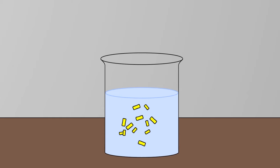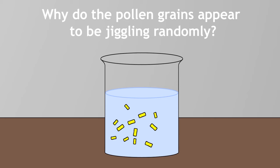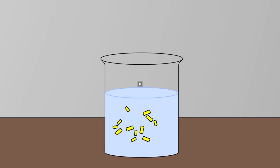Now, here's a challenge for you. Thinking about what we know about dust particles, can you explain why the pollen grains appear to be jiggling randomly? Pause the video and continue when ready.